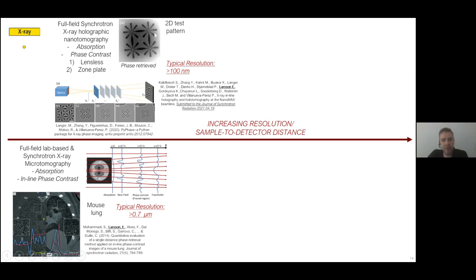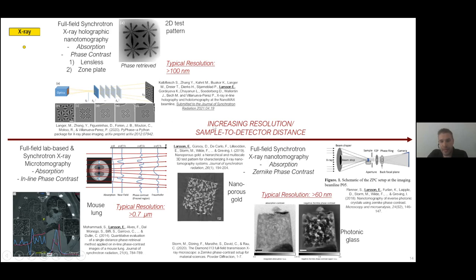To reconstruct this sample, you need to do phase retrieval. You need to acquire several projection images at several sample-detector distances. Typical resolution is around 100 nanometers. There's also full-field x-ray nanotomography which uses lenses and can be combined with phase rings to have more contrast in the Zernike phase contrast regime. This technique doesn't require phase retrieval; you get the high contrast directly.